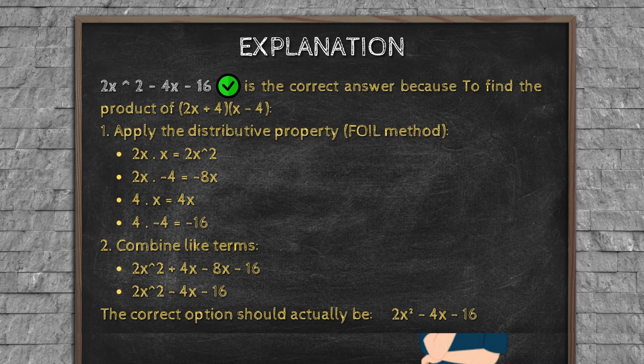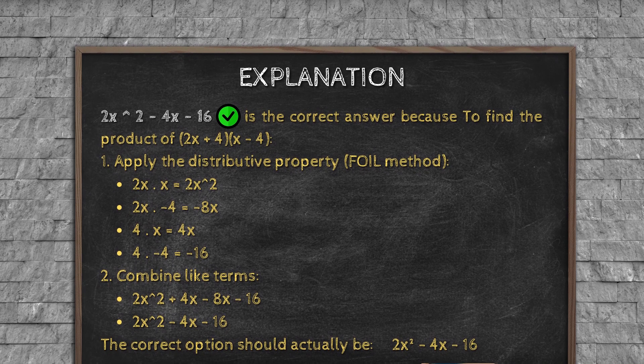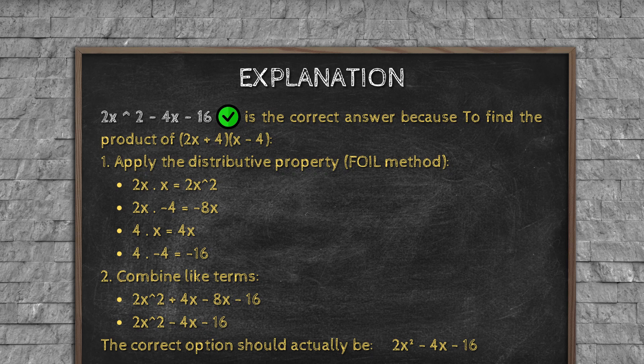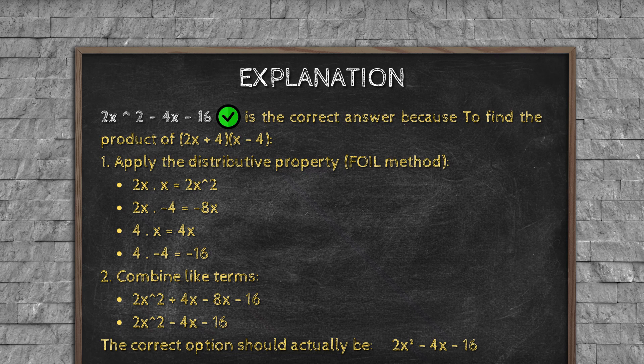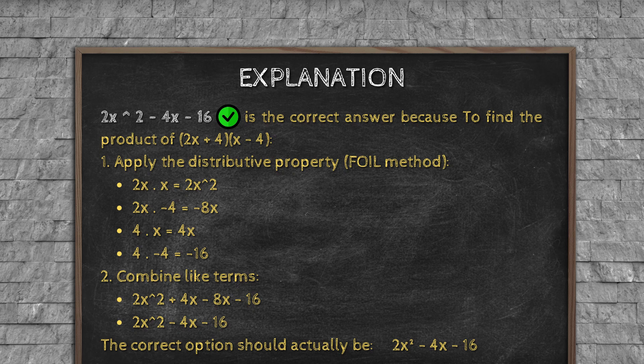Explanation: 2x² - 4x + 16 is the correct answer, because to find the product of (2x + 4)(x - 4): 1. Apply the distributive property, FOIL method. 2x × x = 2x². 2x × (-4) = -8x. 4 × x = 4x. 4 × (-4) = -16. 2. Combine like terms: 2x² + (-8x + 4x) - 16 = 2x² - 4x + 16. The correct option should actually be 2x² - 4x - 16.